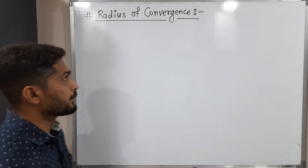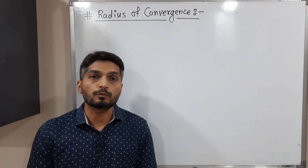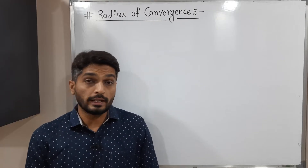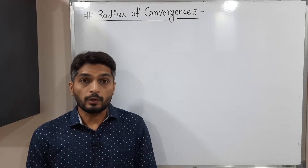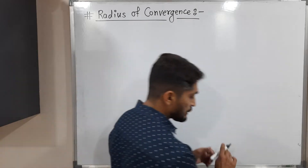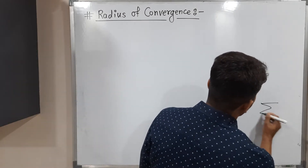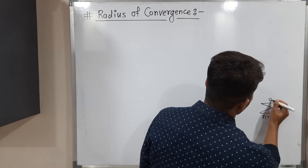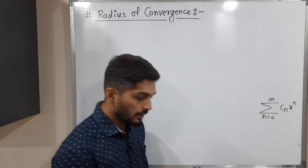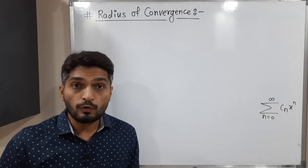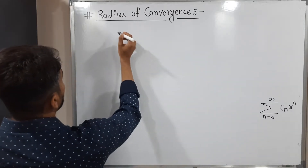Hi everyone. In this video we are going to discuss radius of convergence and interval of convergence. So let us discuss radius of convergence of a power series. We are familiar with this power series: summation running from 0 to infinity of c_n x raised to n. So radius of convergence of such a power series is defined in this way.